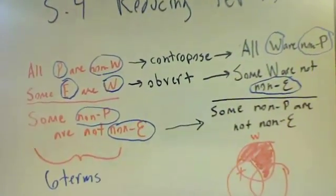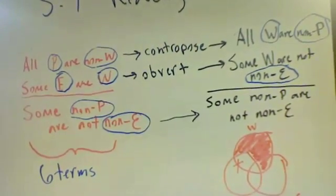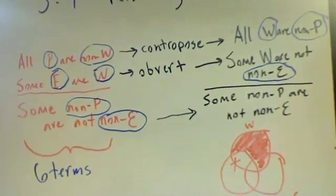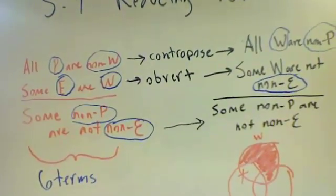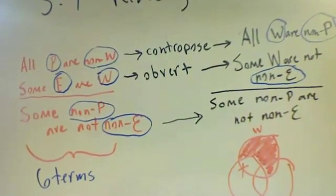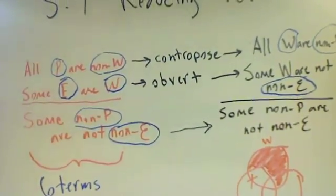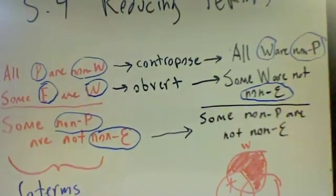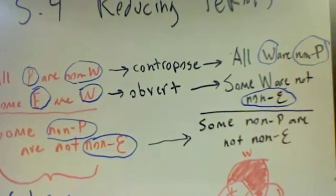So here in reducing our terms, the first argument is in red, which says: all P are non-W; some E are W; therefore some non-P are not non-E. This is obviously a fairly problematic argument because, as you can see, there are six different terms. What I've done here is just by using contraposition and obversion in the first two premises, I've been able to start translating.